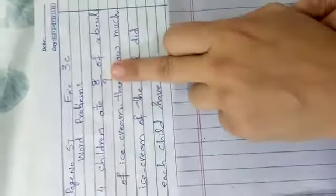This is the first word problem in which 4 children ate 8 ninths of a bowl of ice cream. Then how much ice cream of the bowl did each child have? This is our main question. First judge how you have to solve it. Which number comes first? Which is going to divide? Is 4 going to divide or 8 ninths going to divide?